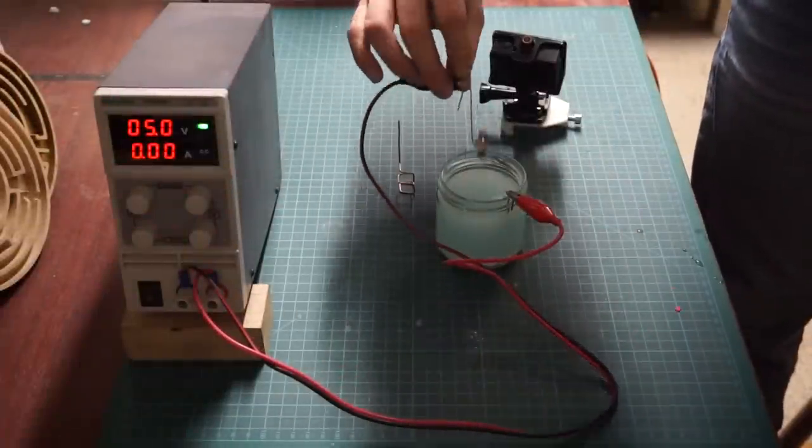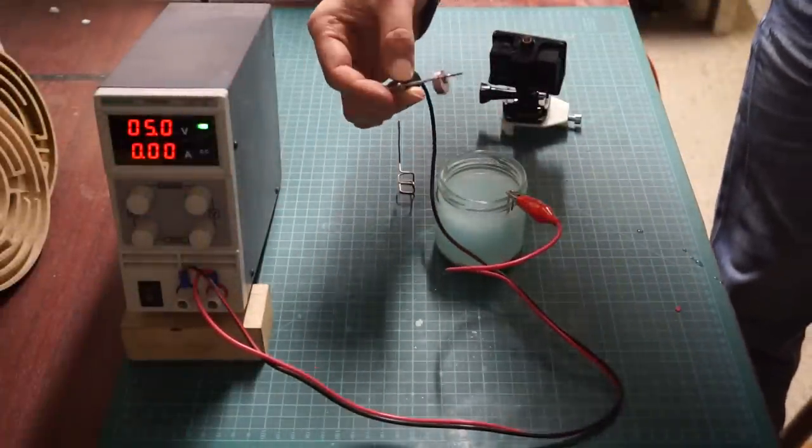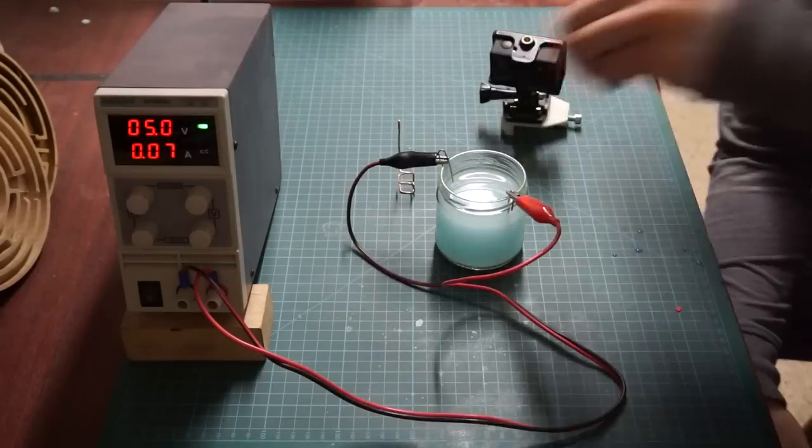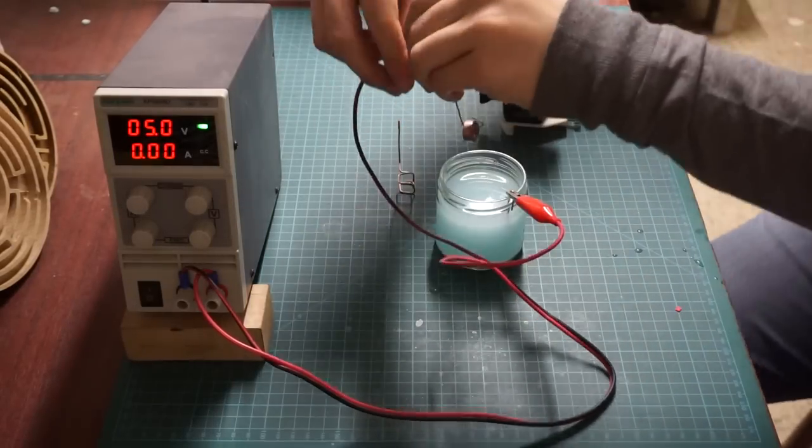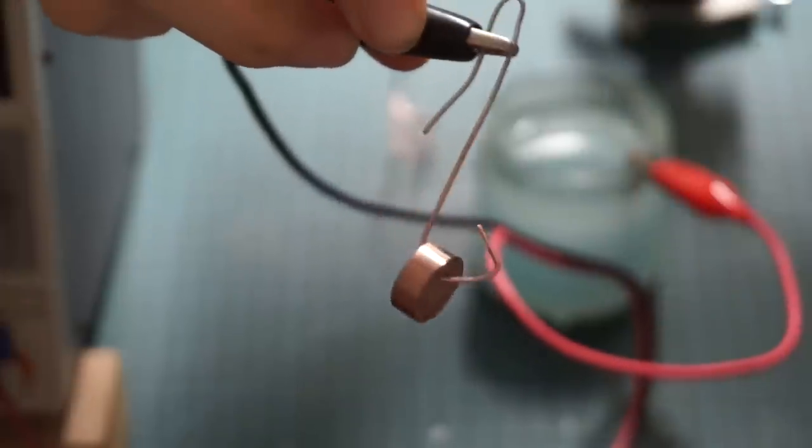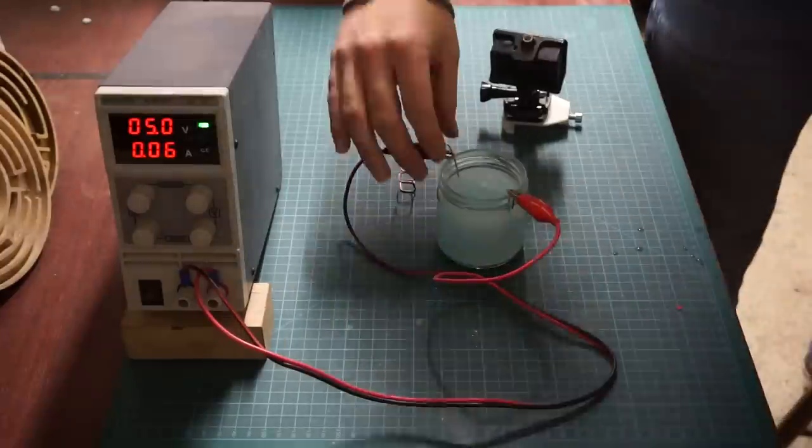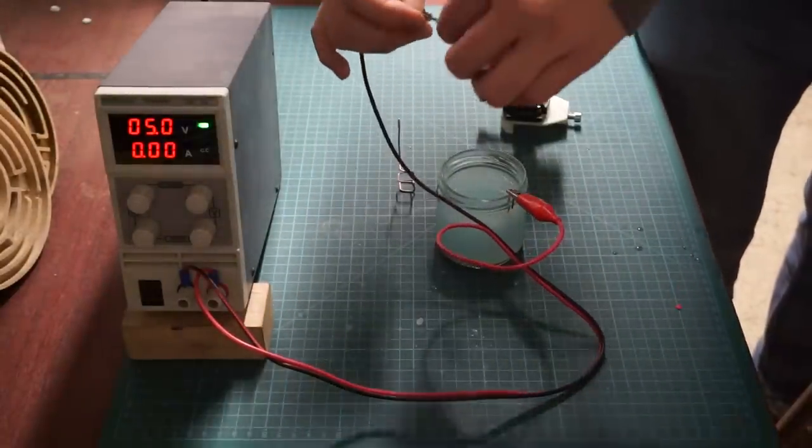After 5 minutes of plating you can already see a pale copper color on the surface. 5 more minutes of plating left us with a thin layer of copper. And after 15 minutes we got a decently good copper coat on our test piece.